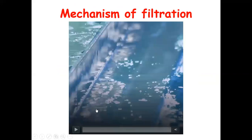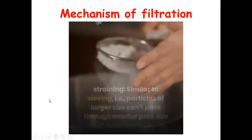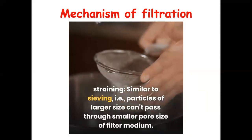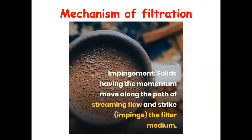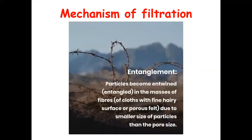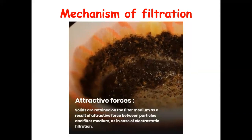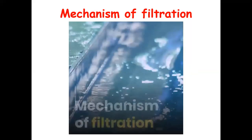Now let us see the mechanism of filtration. There are four types. First is straining — it is very similar to sieving; particles of larger size cannot pass through the pores. Next is impingement — solids having momentum move along the path of the streaming flow and strike the filter medium. Next is entanglement — the particles become intertwined in the masses of the filter paper. And last is the attractive force — solids are retained on the filter medium because of electrostatic forces which develop between them.